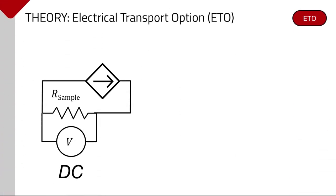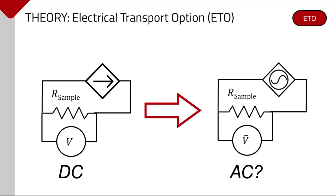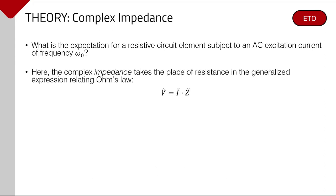While the theory of electric transport for a constant current source is relatively straightforward, how do we understand a measurement wherein the excitation is instead a true AC waveform? The question to ask is, what is the expected response for a resistive circuit element subject to an AC current, here with frequency omega naught? To answer this, we employ a generalized form of Ohm's law for AC circuits, where the complex impedance, denoted as Z, serves as an analog to resistance in a DC circuit. This form is valid in the physical regime where a sample exhibits a linear voltage response to a stimulus current.